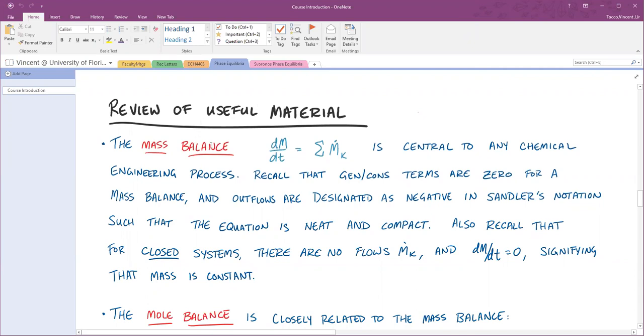The mass balance from ECH 3023 is central to everything you do. In Sandler's notation, he simplifies it greatly. Remember, in ECH 3023 it was in minus out plus generation minus consumption. For a mass balance, you cannot generate or consume mass, so those terms are zero. The in and out terms are simplified to just this one sigma m dot sub k term. He specifies outflows as negative so you can have one term, which makes the equation neat and compact.